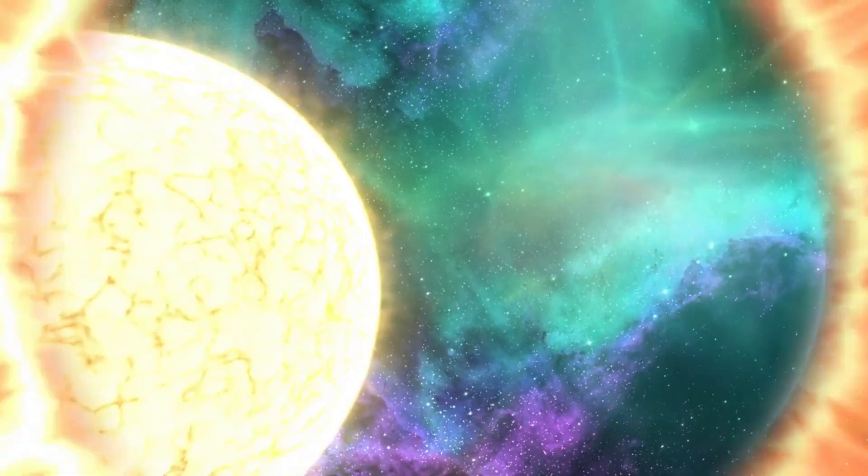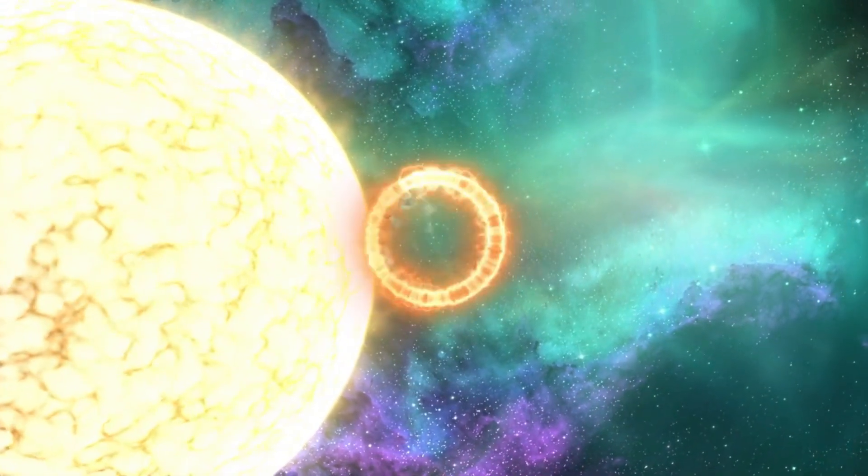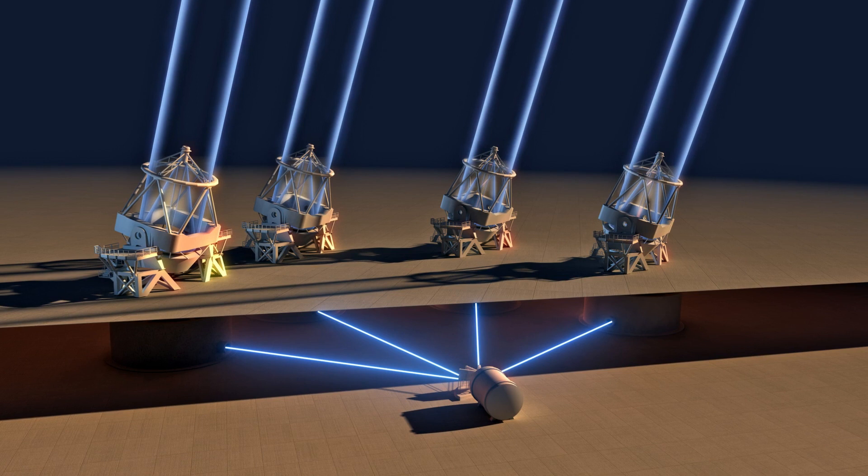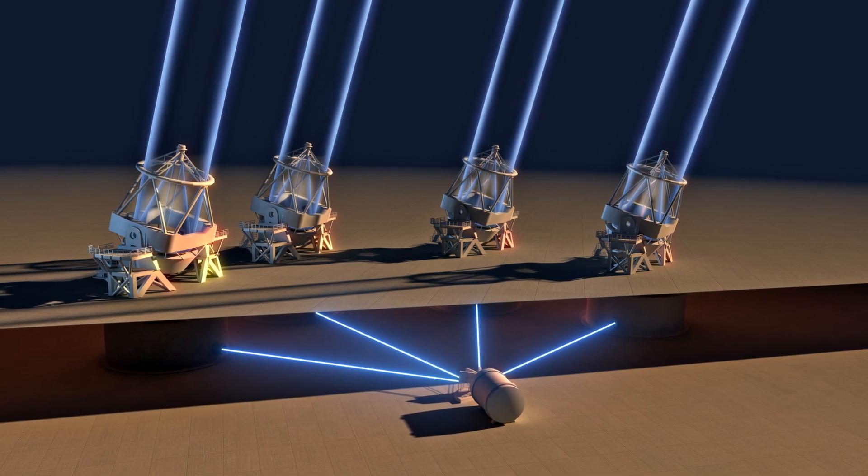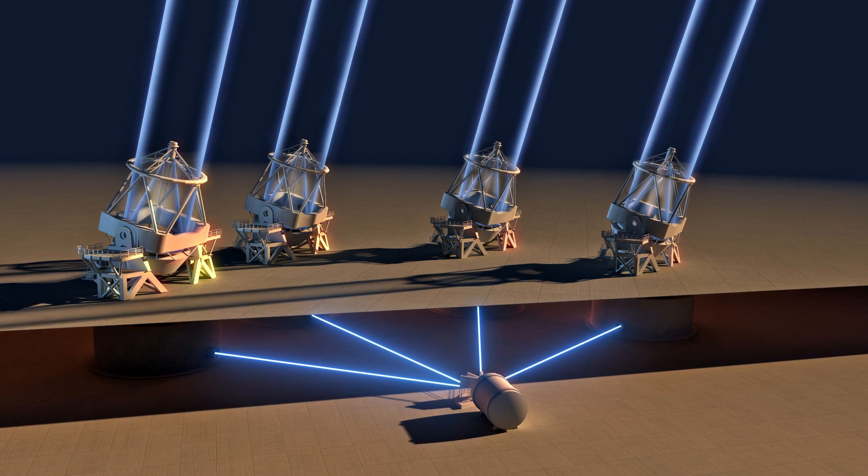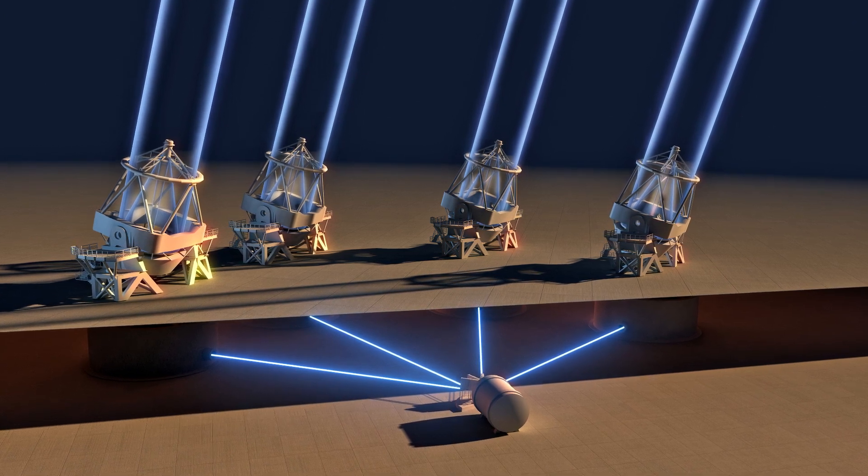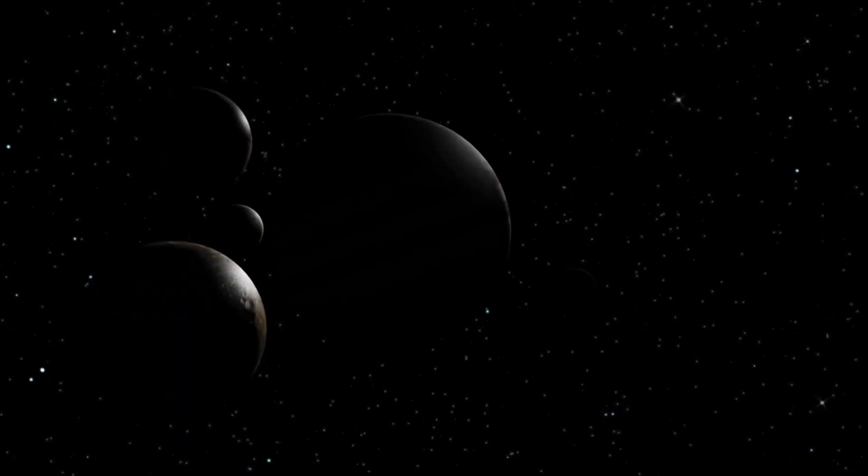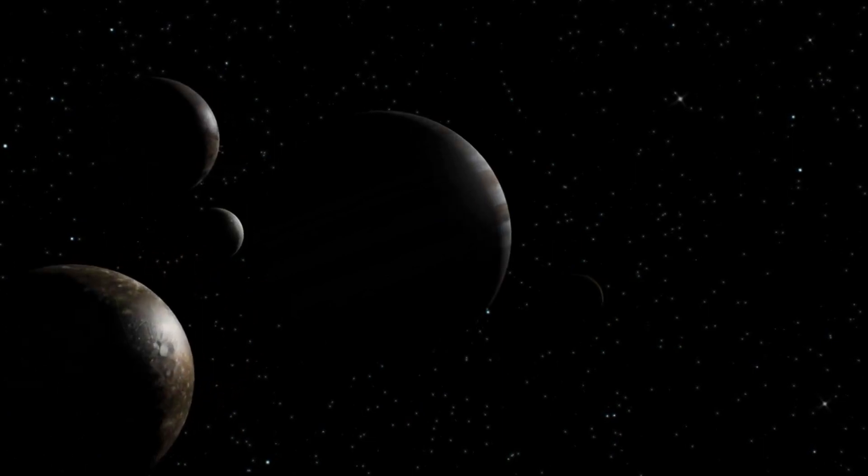Between its 39.3-meter primary mirror, 4.2-meter secondary mirror, and an advanced suite of instruments which includes a spectrograph, coronagraph, and adaptive optics, the ELT will play a vital role in expanding the exoplanet census.